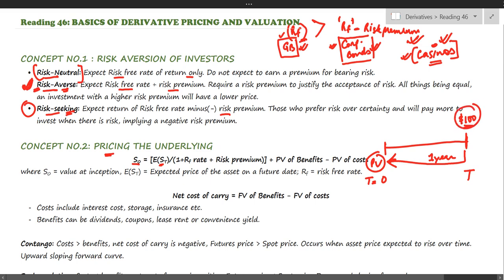The expected price at expiry, E(ST), is discounted by a discounting factor which is the risk-free rate plus a risk premium, because a rational investor is considered to be risk-averse and will expect a risk-free rate of return plus some risk premium for assuming higher risk. This gives us the present value of future benefits, and that is the price of this security today. However, this will be the case when there are no cash inflows or outflows in between.